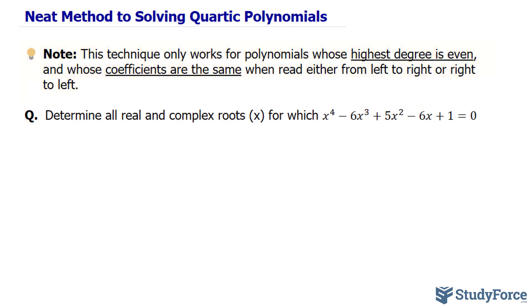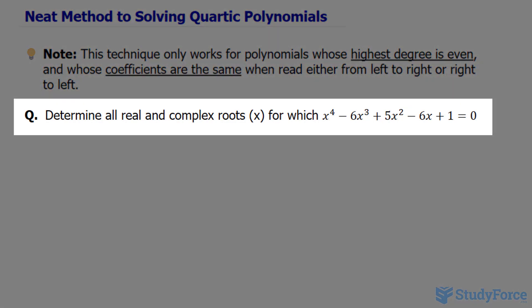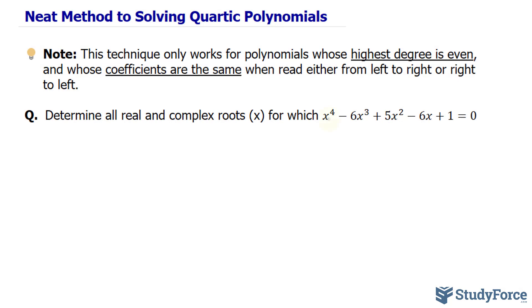This will make more sense as we read the question, which reads: determine all real and complex roots for which x⁴ - 6x³ + 5x² - 6x + 1 = 0. Notice that the coefficients are 1, -6, 5, -6, and 1. Reading this from left to right is the same as reading it from right to left. If this is not the case for your question, ignore this technique.